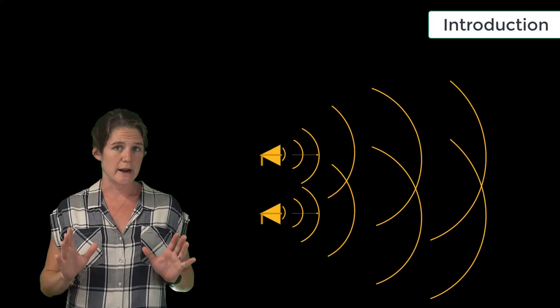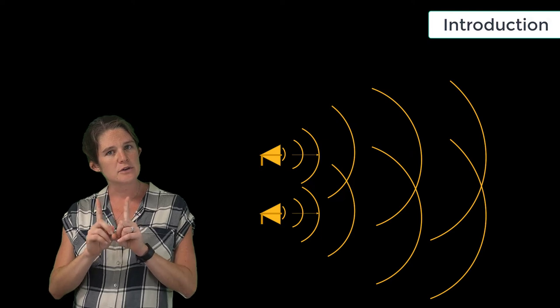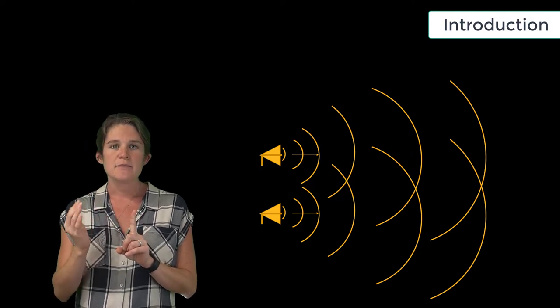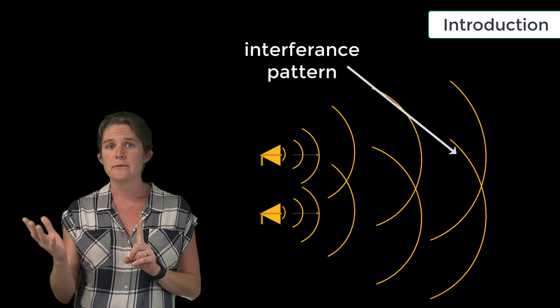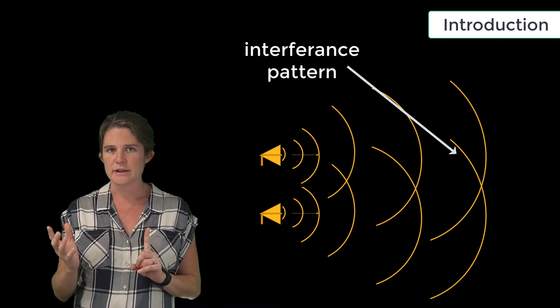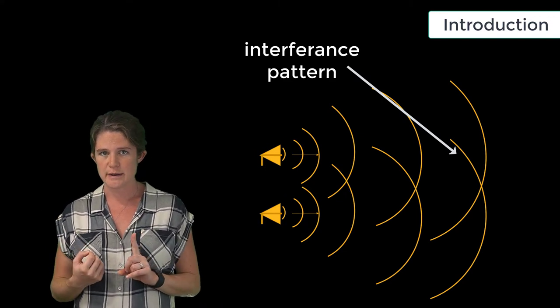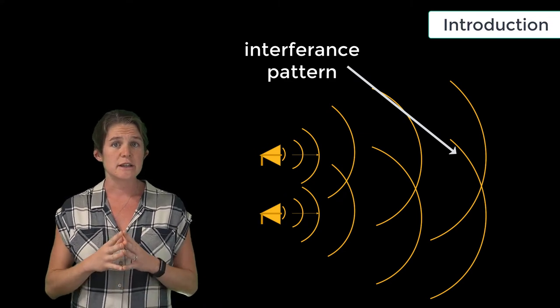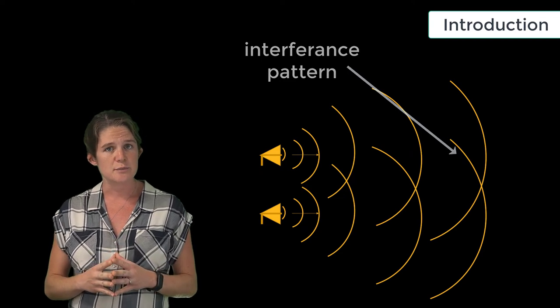When two or more radiating elements are operated in close proximity to one another, the interference of their radiated fields can become a major factor in determining their collective radiation pattern. Antenna engineers leverage this fact to their advantage by